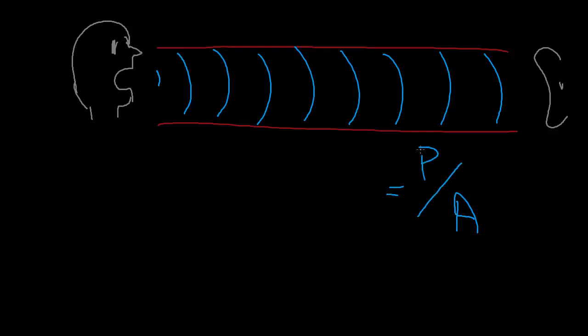And that's why after we normalize we get this thing called the intensity, which is measured of course in SI units of watts per meter squared.